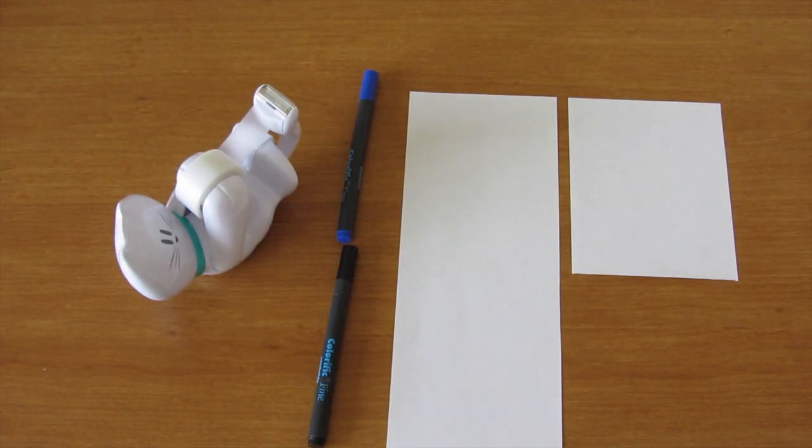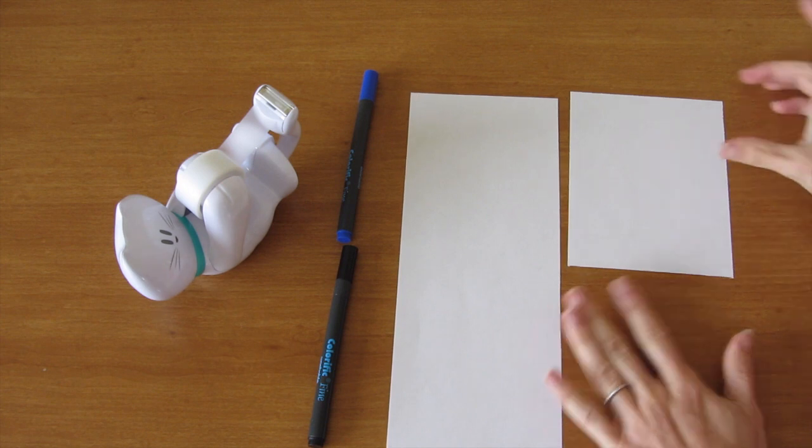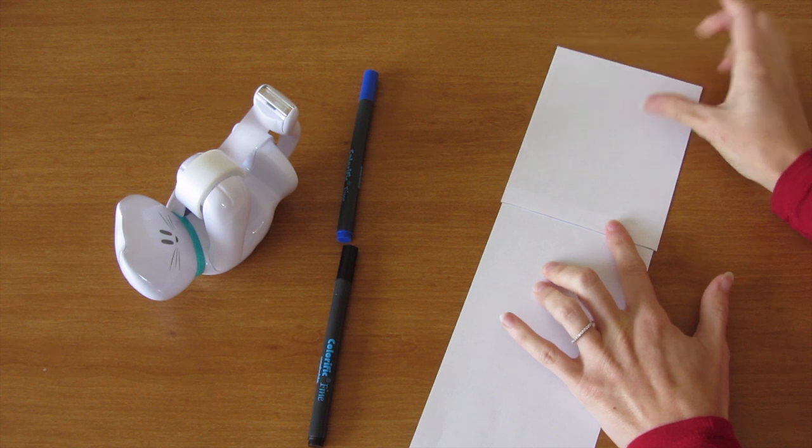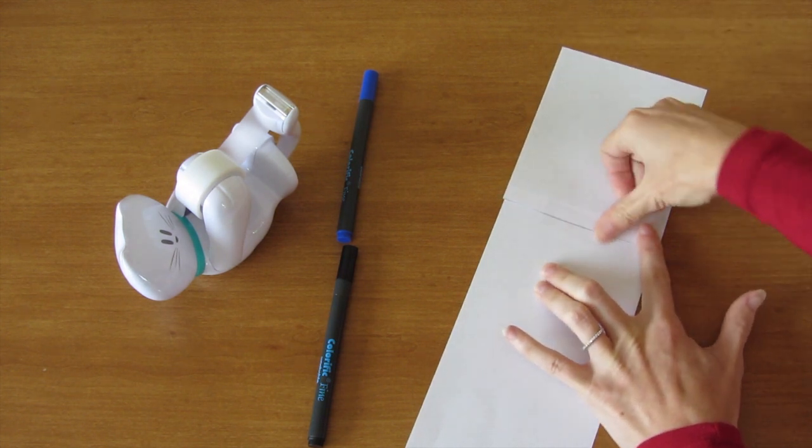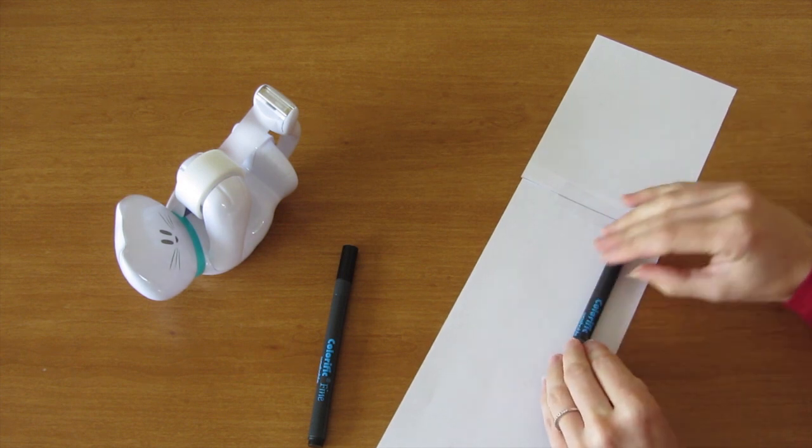The mainmast, the taller one, is very similar. This is a half sheet of paper. This is a quarter of a half sheet of paper. I'm going to overlap them a little bit, tape it, and then roll it around the marker same as I did with the foremast.